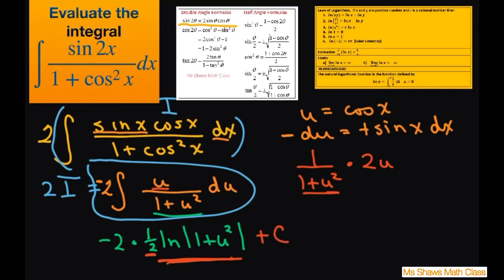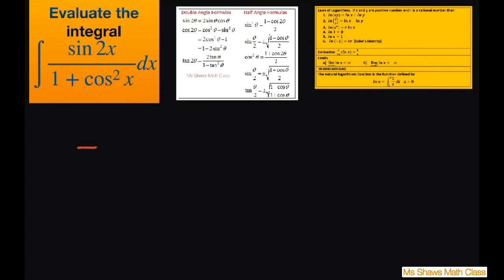Now what's going to happen here is the 2's cancel, and you're going to get negative, and we have to substitute back in our u. So when we do that, we're going to get negative ln of 1 plus cosine squared of x plus c.